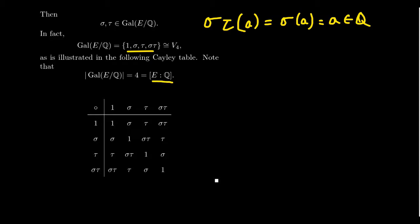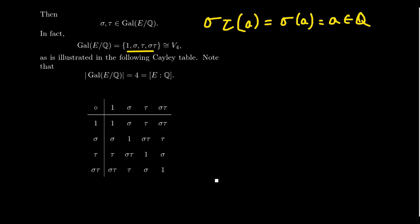E over Q is a degree-4 extension — it's a biquadratic extension. The Galois group also has order 4. This isn't a coincidence. This is actually how I know to stop: I've come up with four distinct field automorphisms, and since there can be only four, that tells us we're done. We'll prove that a little bit later.